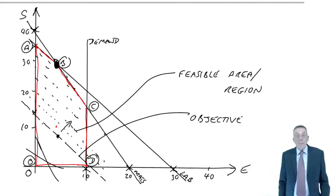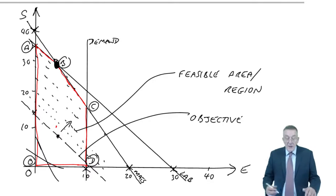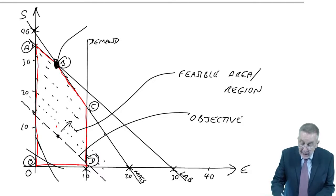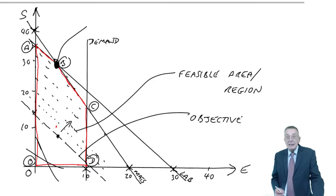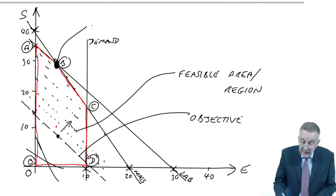But because we know the angle of the line, in this particular case, the furthest point away is point B. And so point B is our optimum, our best.